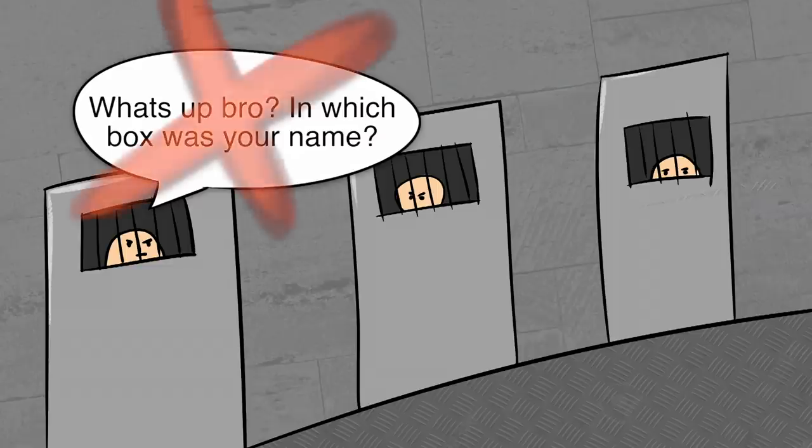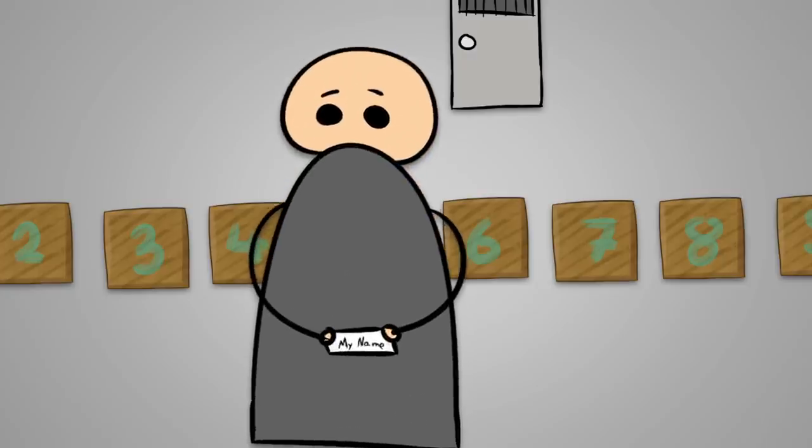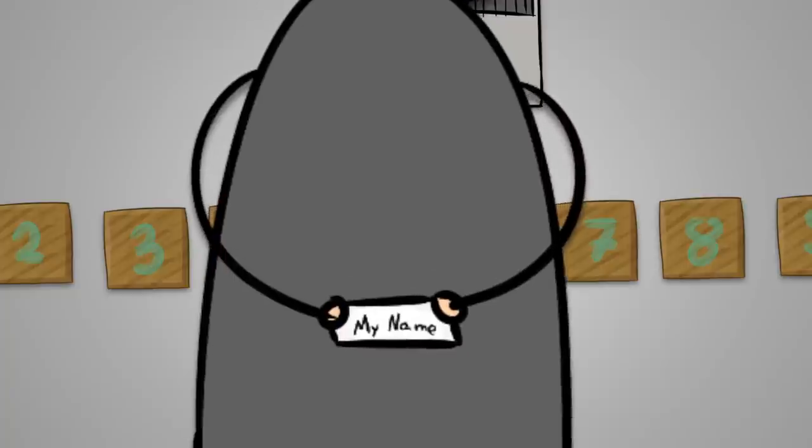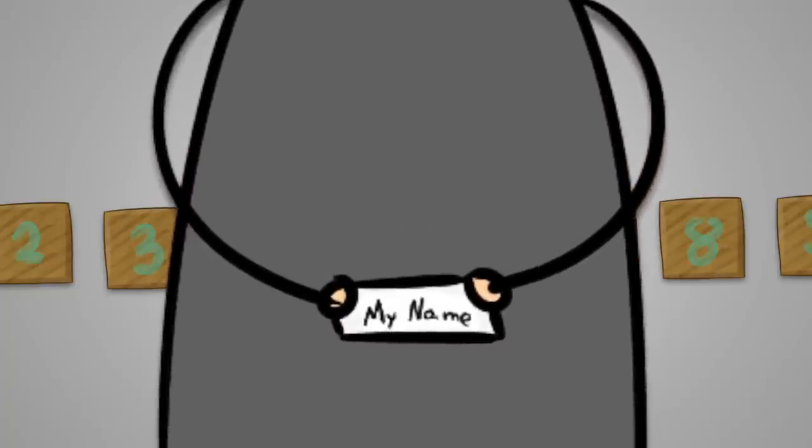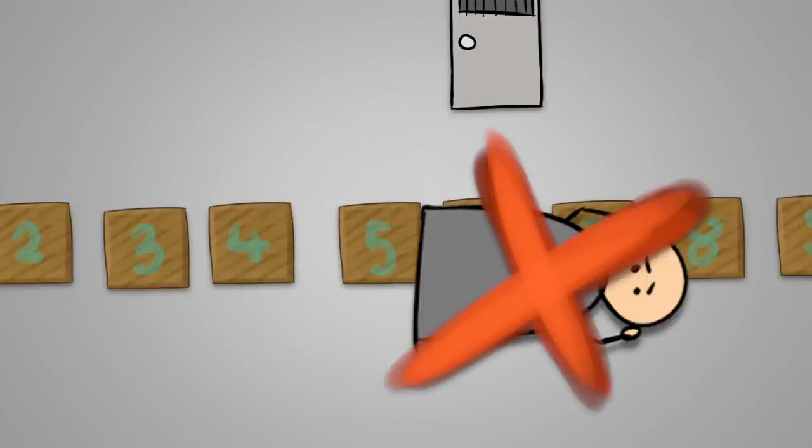They are not allowed to communicate with each other in any way. If every prisoner is able to enter the room and open the box with his own name, they will all be released from prison. However, if even one prisoner does not open the box with his own name on it, they will all be executed.